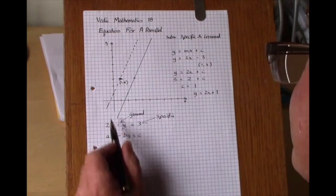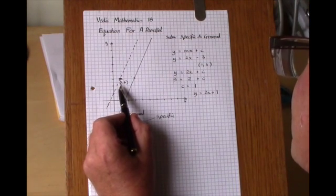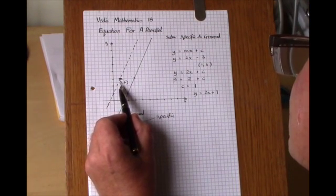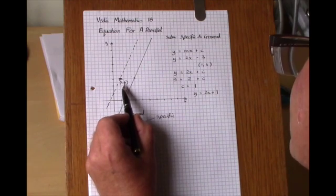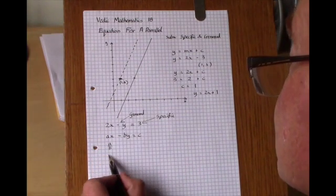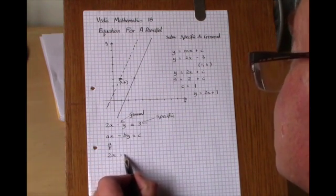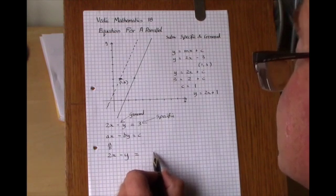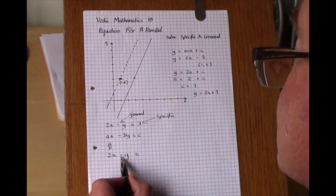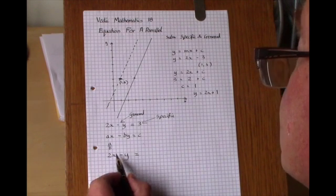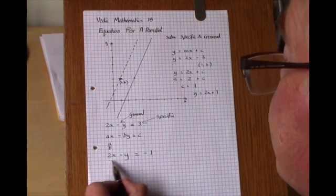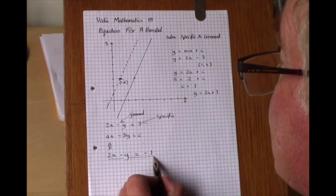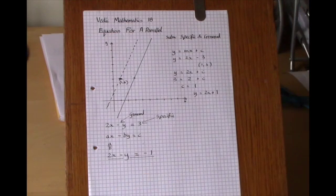So now all we have to do, the only thing we need to do, is to substitute in this 1 and 3 (x is 1, y is 3) into the left hand side of the equation, 2x minus y, in order to obtain the right hand side. So it's 2 times 1 take away 3, which is minus 1. And that's the one line method from weighted mathematics.